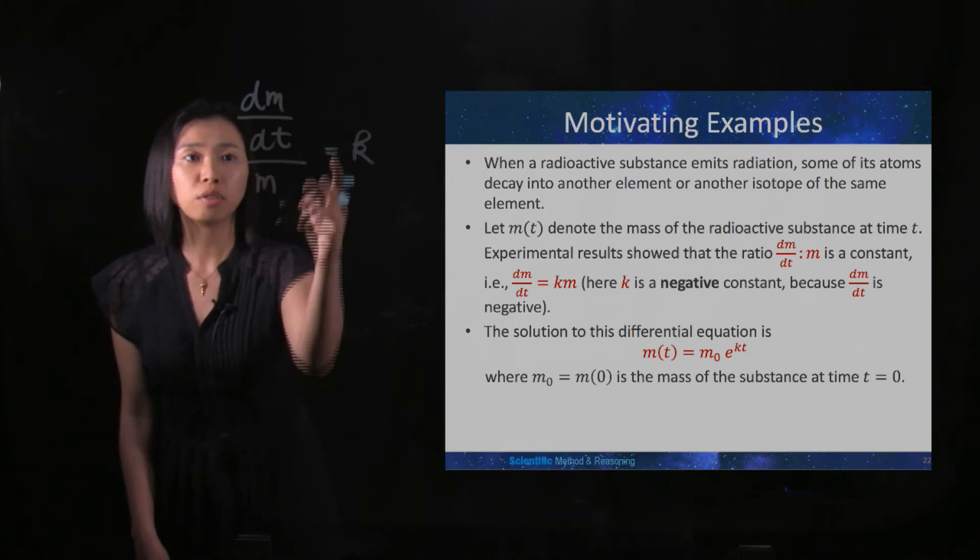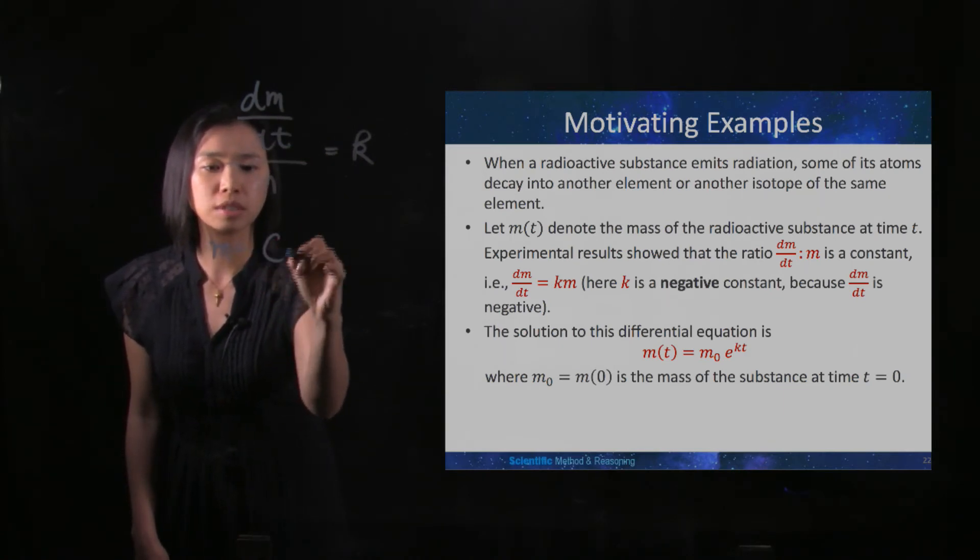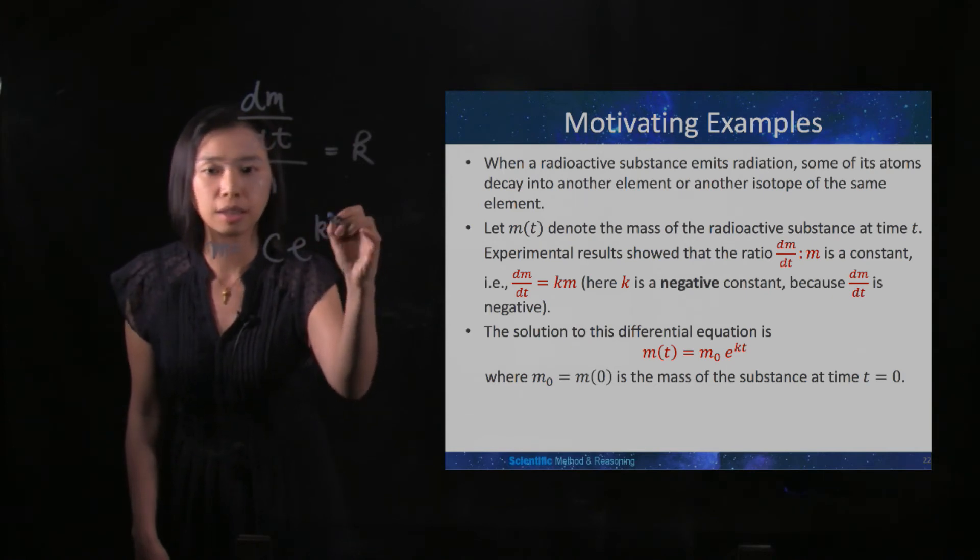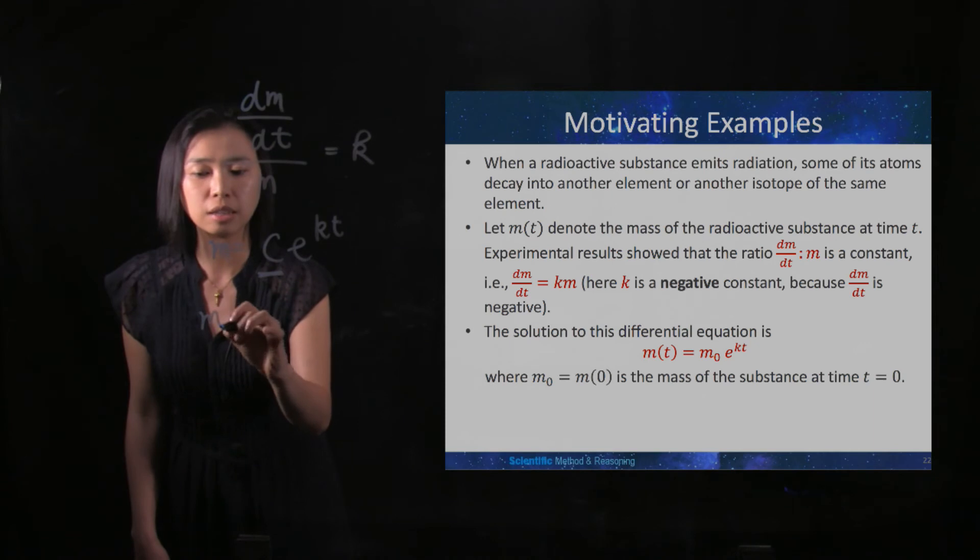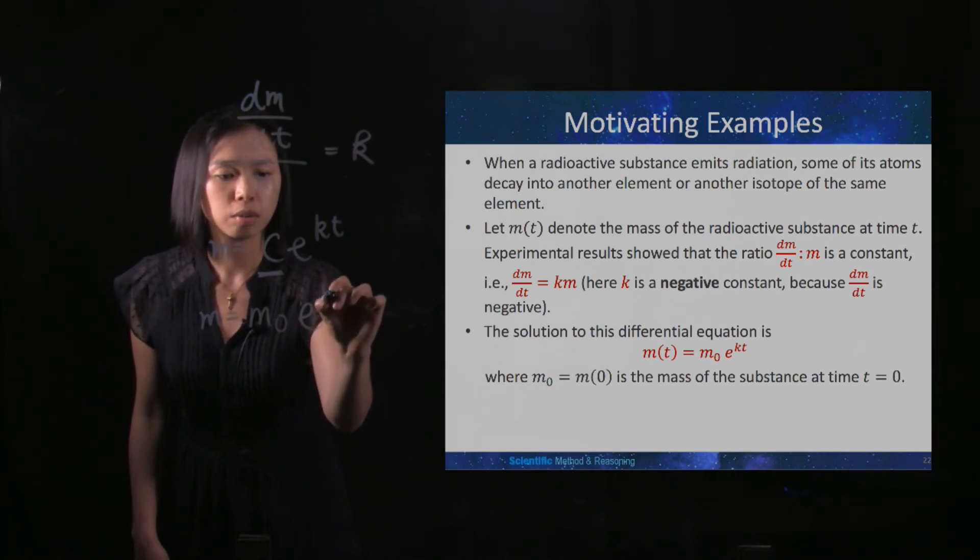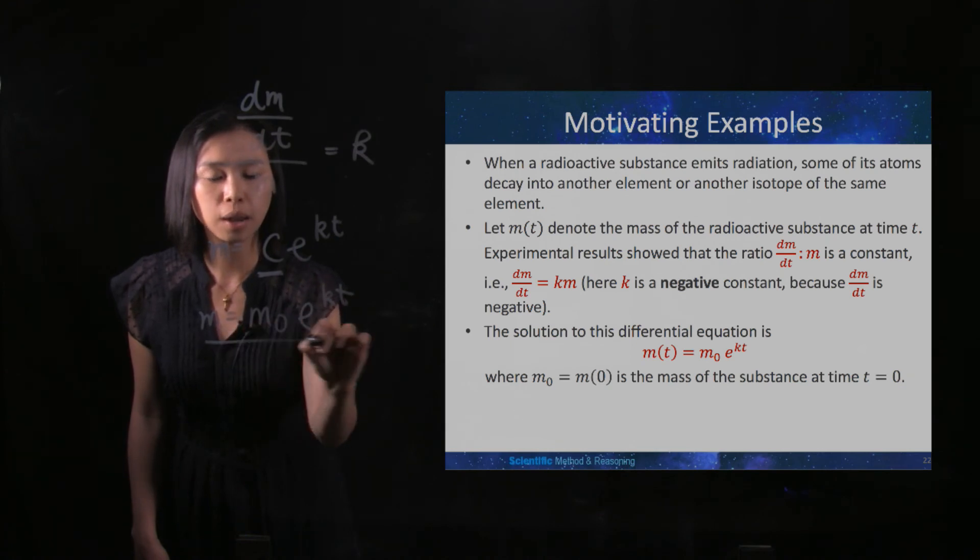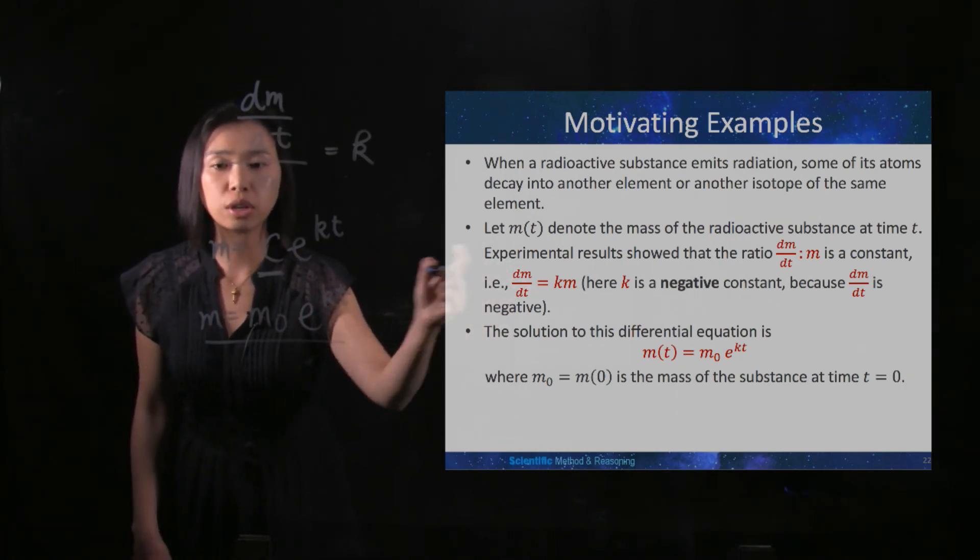For this differential equation, the solution is m equals c·e^(kt). From previous examples, we know that c is the initial mass of the radioactive substance. That is why we have this as the particular solution of this differential equation.